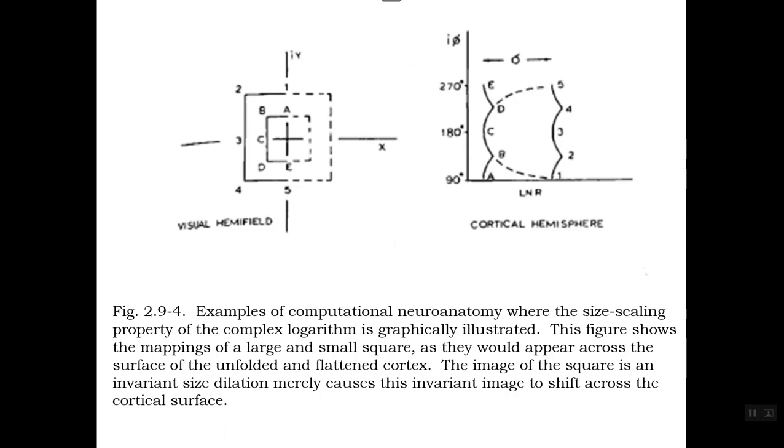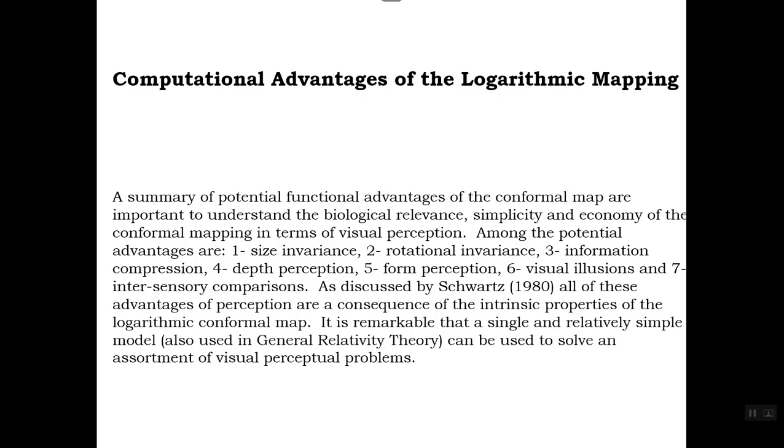Some of these things that you gain is size invariance. On the left is the visual hemifield. I took it from one of Eric's publications. As you increase the size of a square on your retina, you keep the exact same shape in the cortex. It's shifted, but it's the same shape. Same thing with rotational invariance.